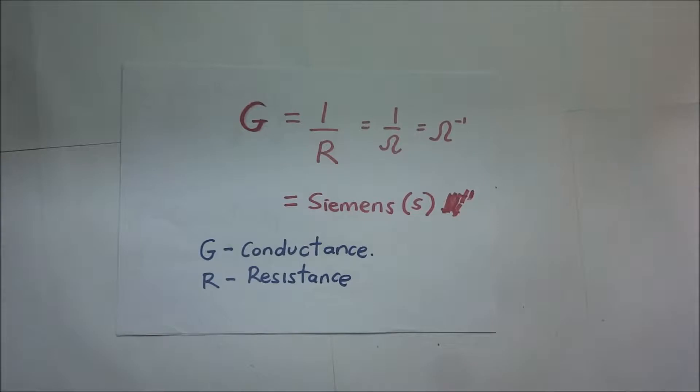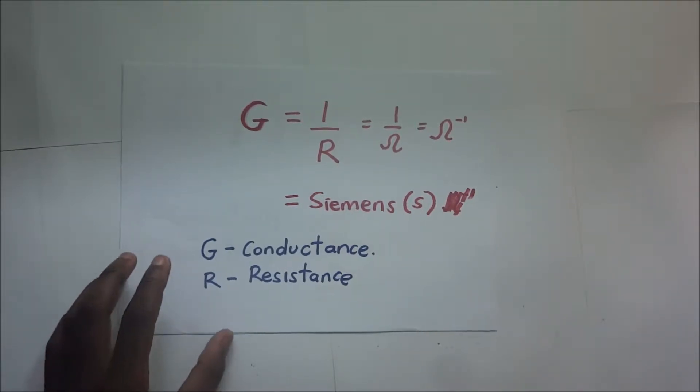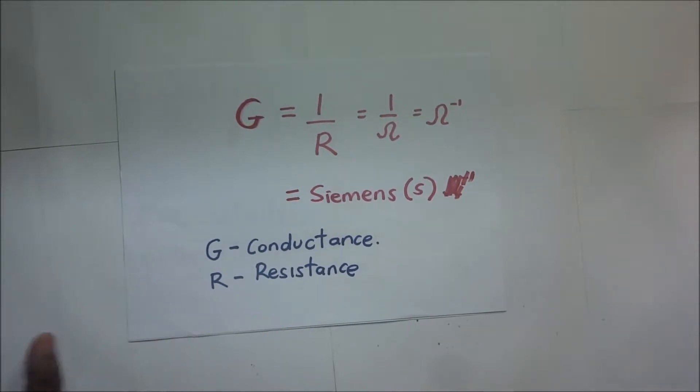To understand conductance and conductivity, we need to appreciate where this is coming from. It goes to resistivity and resistance. We all know that resistance is the opposition to flow of current in a circuit.